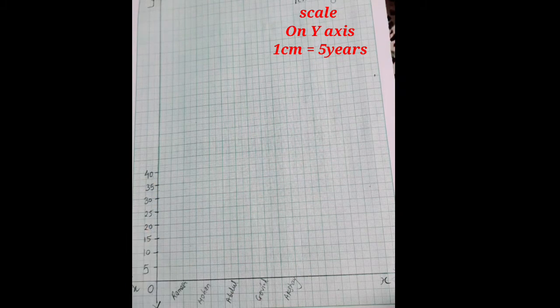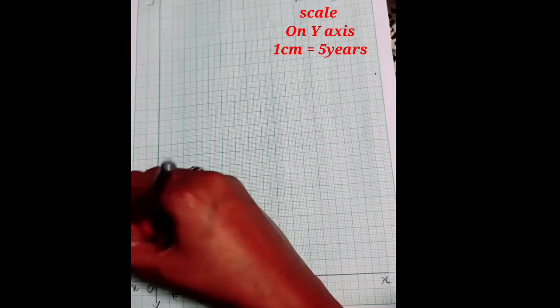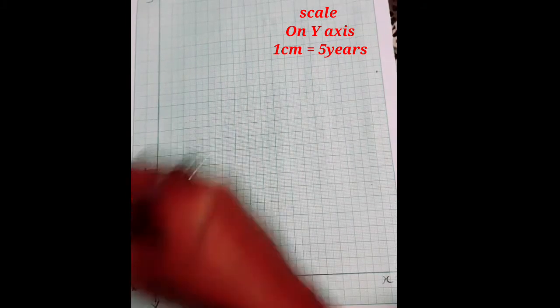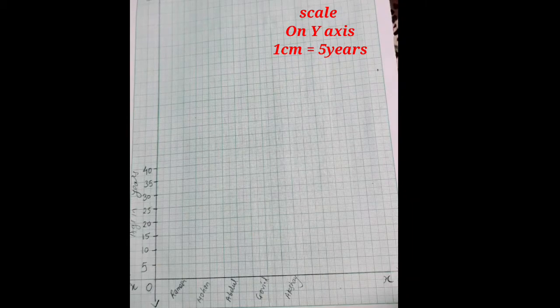25, 30, 35, 40. The maximum year is given 40. So here we will write age in years.